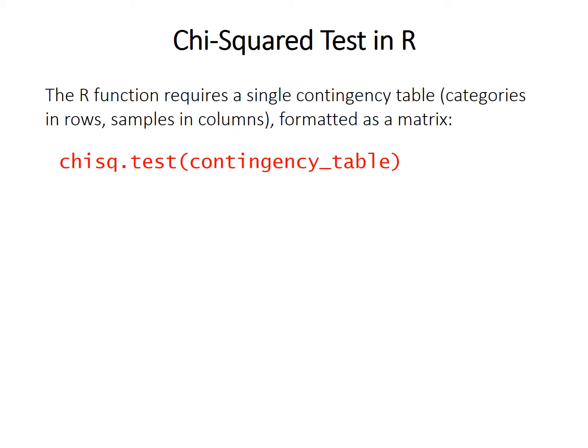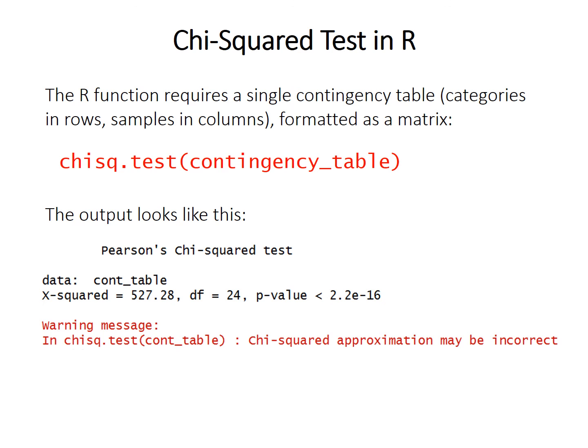In R, the chi-squared test requires just one contingency table as its input. For the type of table you'll have in the geosciences, it should be formatted so that your categories are the rows and the samples in which you've measured those categories are the columns. The function is called chisq.test, and its output gives the test name, the chi-squared value (labeled x-squared), the degrees of freedom (df), and the p-value.